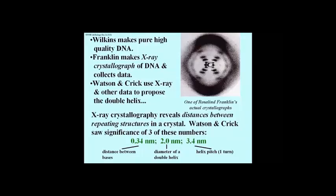Watson and Crick realized that the 2 nanometer number would be the diameter of a double helix. It was too large to be a single strand of DNA and too small to be a triple helix. So they figured it must be the diameter of two strands placed together.